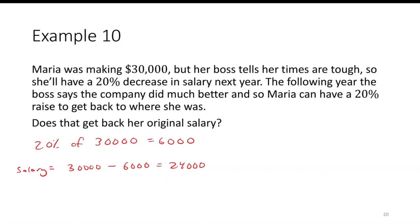So the following year, she had a 20% raise. That's going to be 20% of that $24,000. And that comes out to be $4,800. So if I go $24,000 plus $4,800, that means her current salary is $28,800.